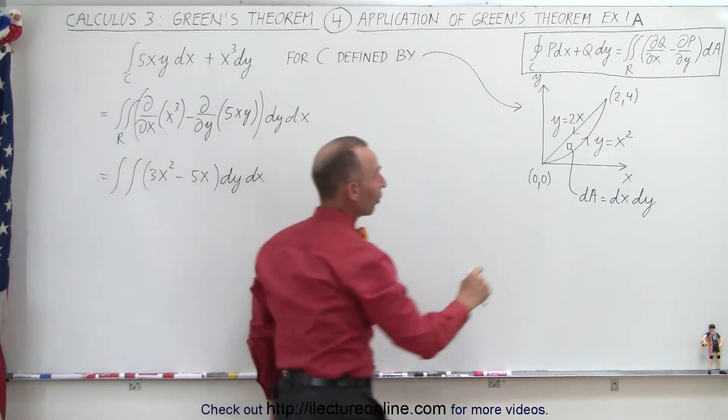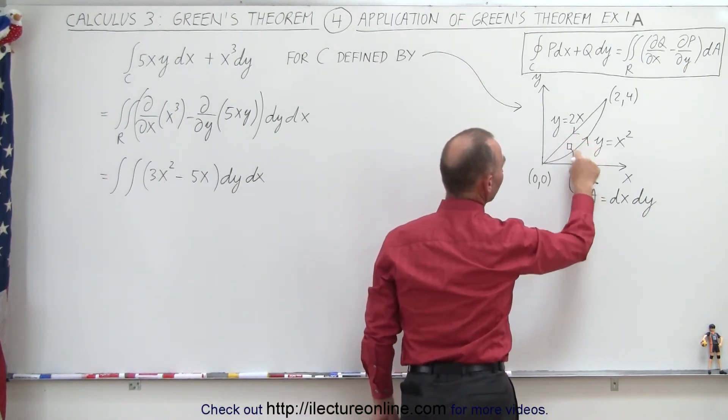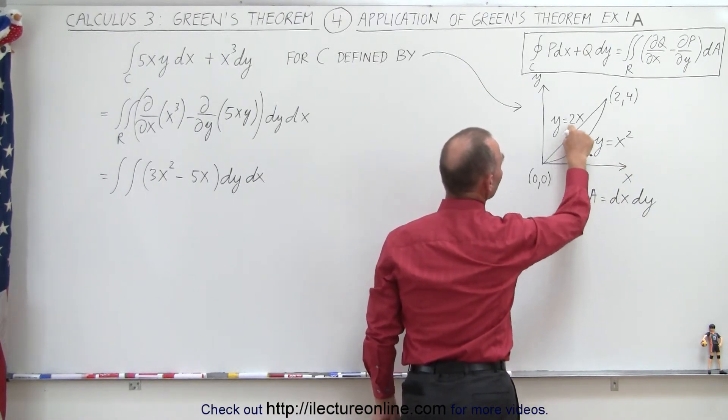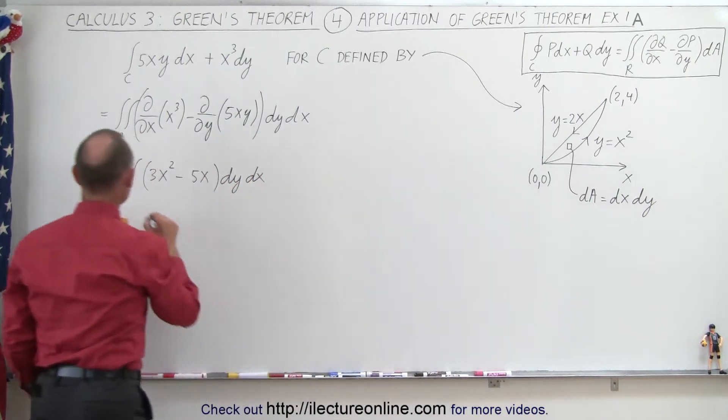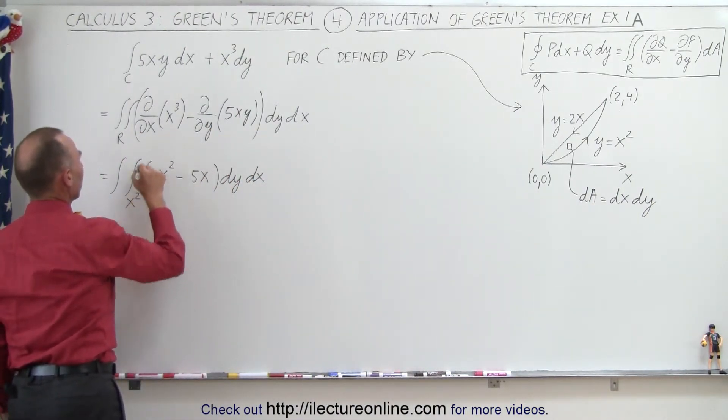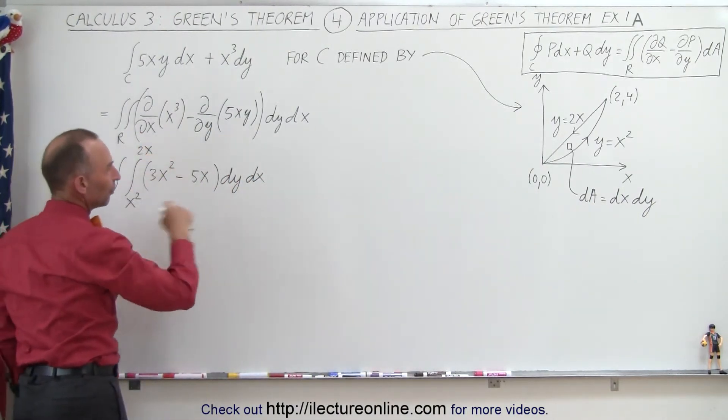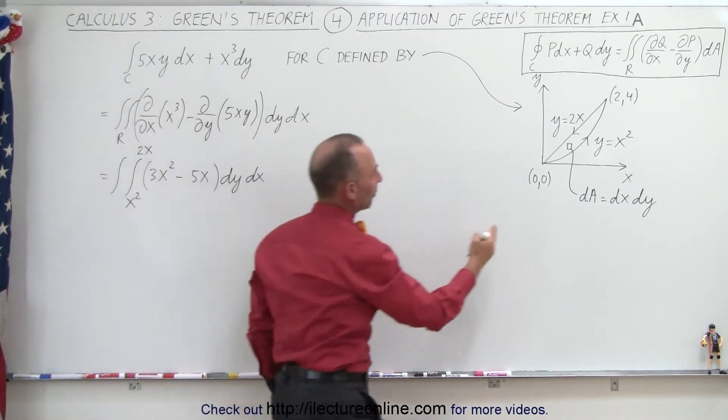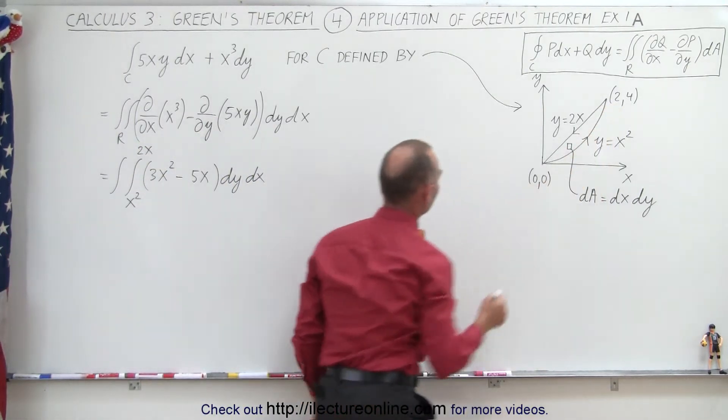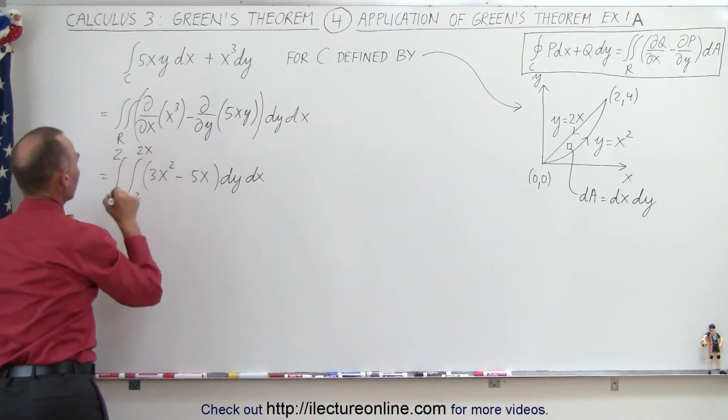So the y limits go from the bottom curve to the top curve. So y at the bottom is x², y at the top is 2x. So we get x² here and 2x here. And then if we integrate in the x direction, that will be from x = 0 to x = 2.